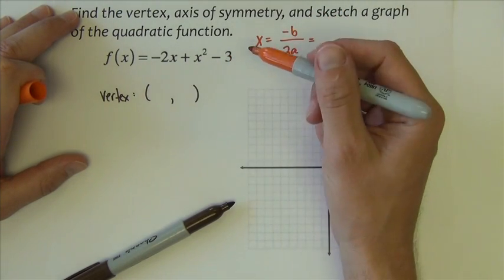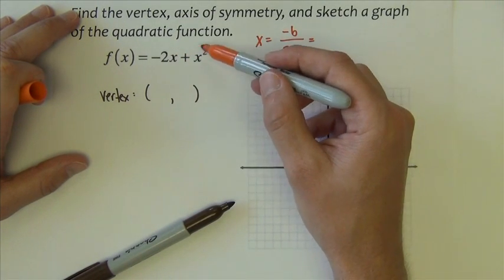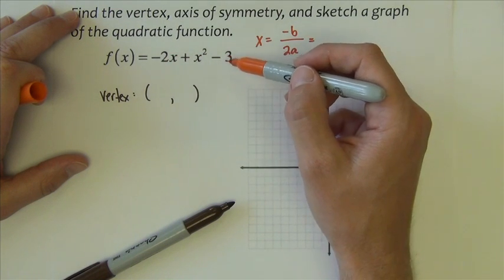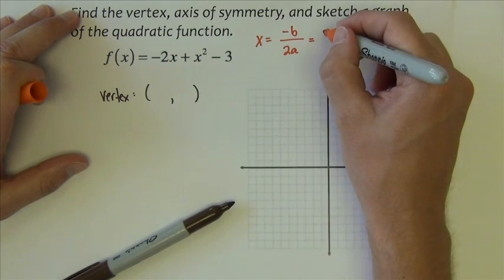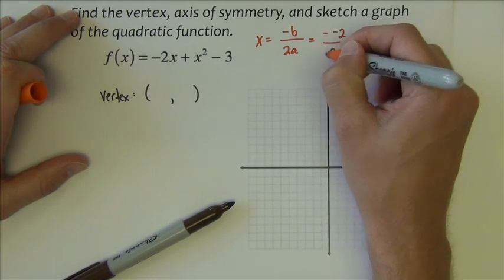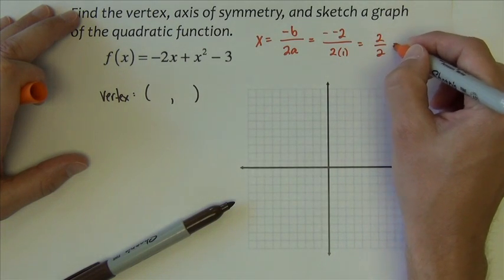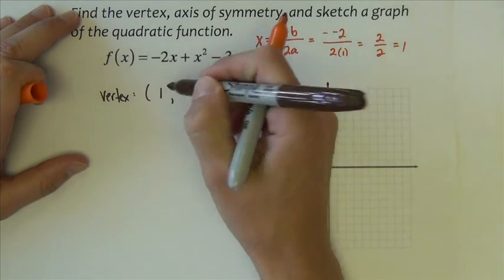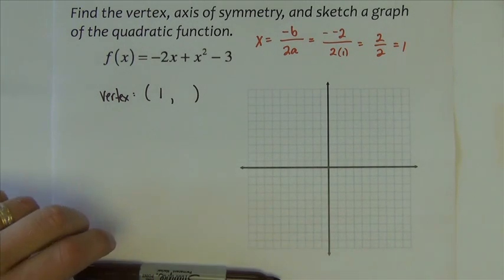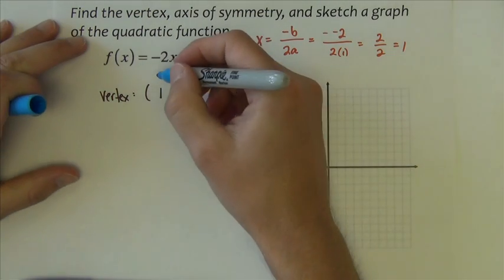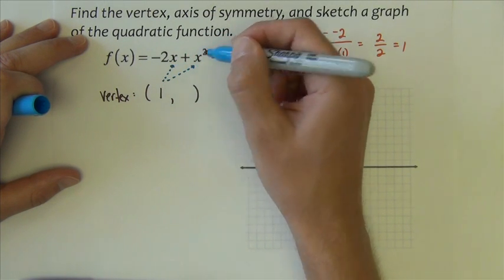To find the X value of the vertex, we're going to use the equation negative B divided by 2A. In this quadratic function, notice the terms are out of order. X squared should come first, then the X, then the negative 3, so this is really the B. It's just out of order. So I would have negative negative 2 divided by 2 times the A, which is 1. That's going to be 2 divided by 2, which is 1. That is the X value of the vertex.